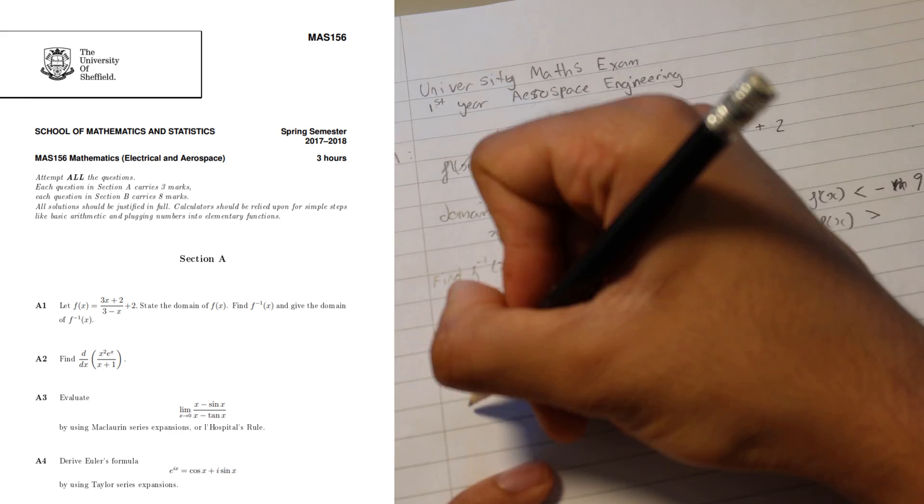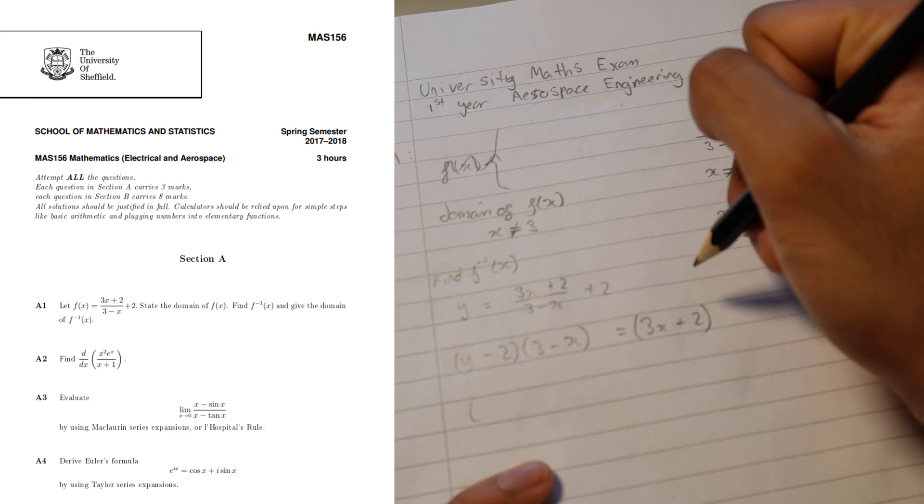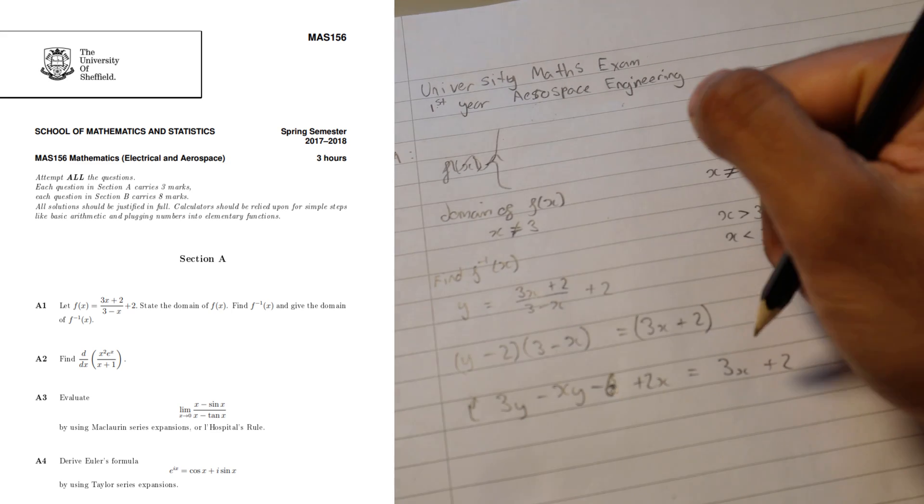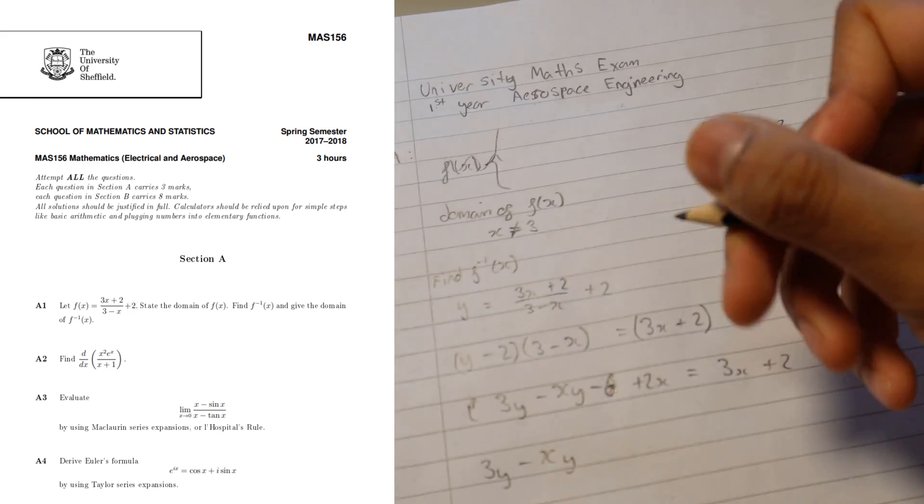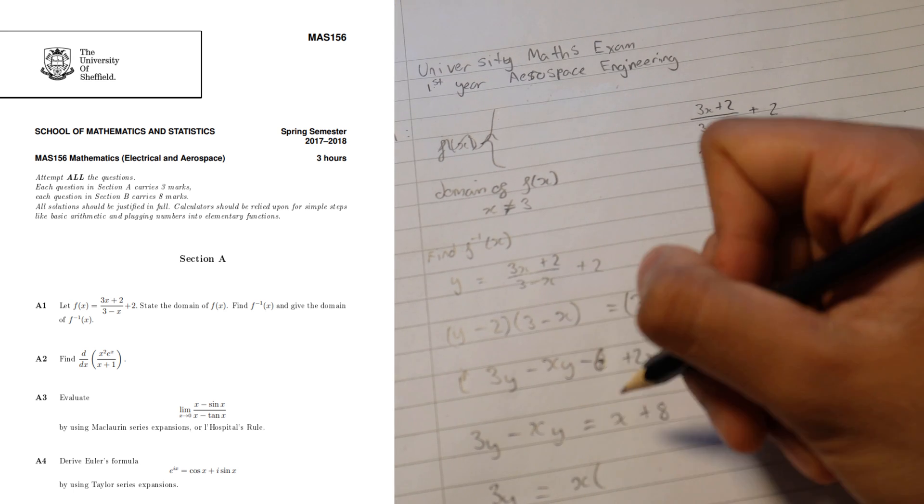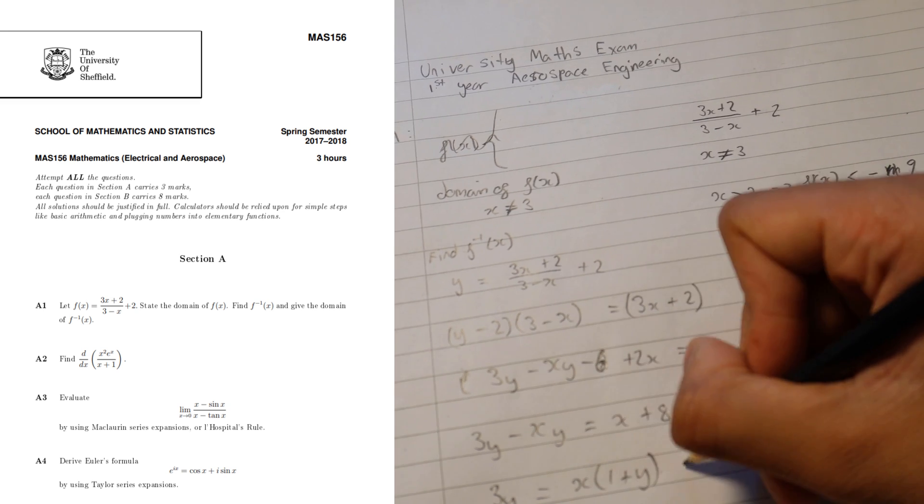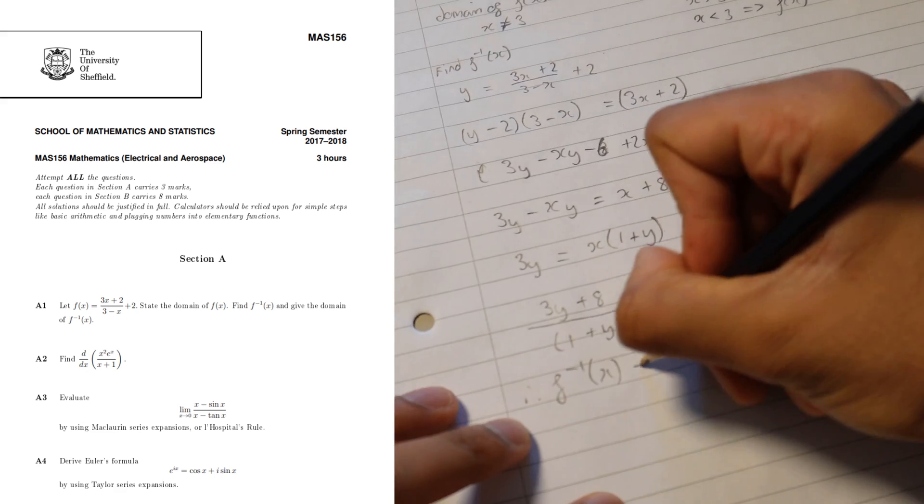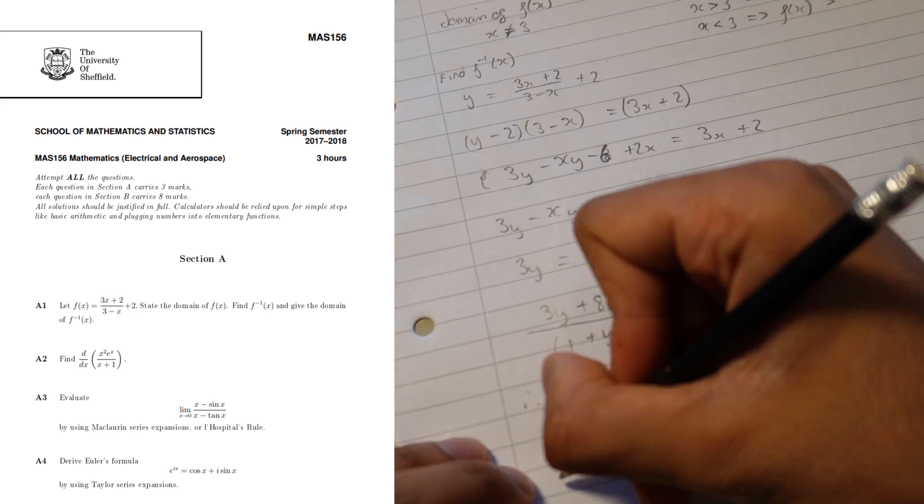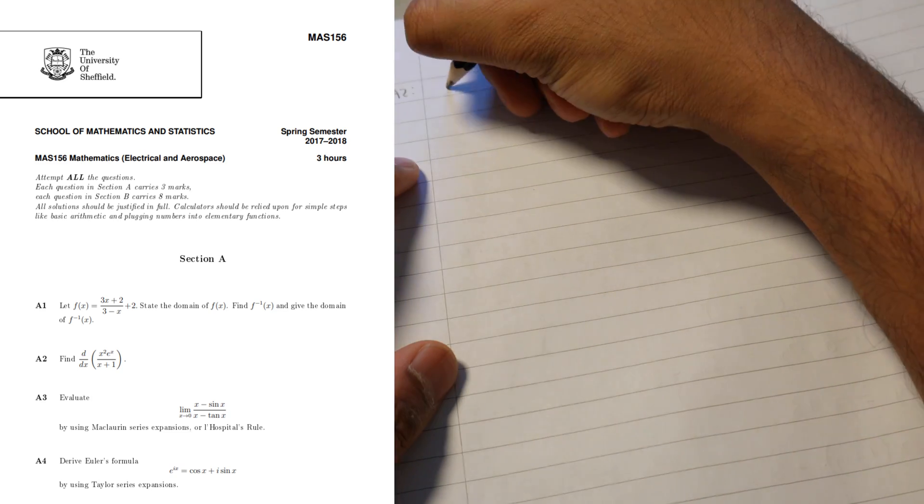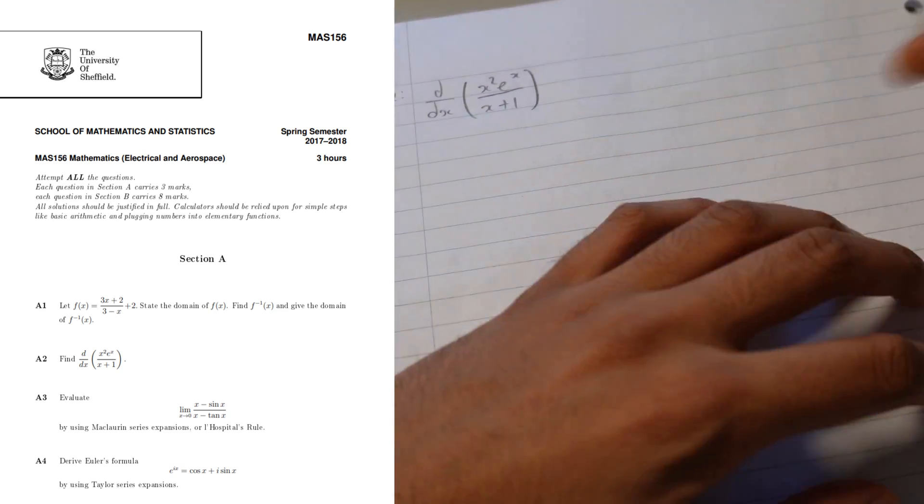This next part of the question is basically to try and invert the original function. The way you do that is by setting f of x equal to y and basically rearranging so that you end up with x as the subject. Once you have that, you know that all the y terms you make them back into an x, and then you say that f inverse x equals the function that you end up having, and then you have to figure out the domain of f inverse x.